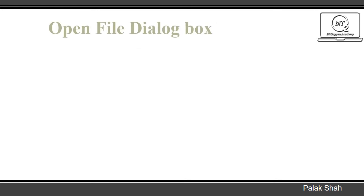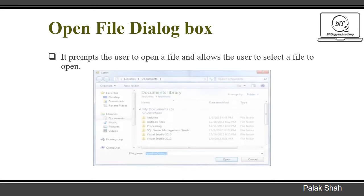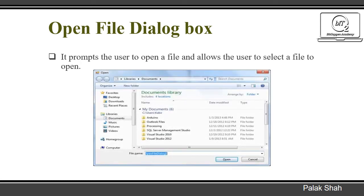Open File Dialog Box. It prompts the user to open a file and allows the user to select a file to open. Here we can see the image of the open file dialog box. I will explain it in detail in the next video. The user will have to select the file which he or she wants to open from a specific location and then click the Open button.